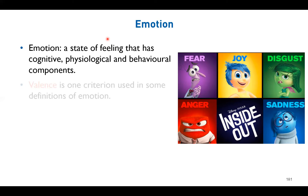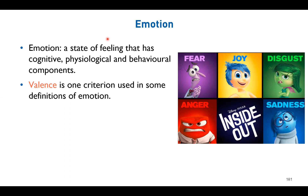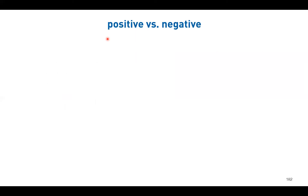If I have to give a definition: emotion is something like a state of feeling that has cognitive, physiological, and behavioral components. One important concept in emotion is valence — it describes the positiveness or negativeness of an emotion. Positive valence includes emotions like joy and happiness; negative valence includes emotions like anger or fear. Valence is one of the most commonly used terms to describe emotion in research.